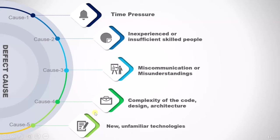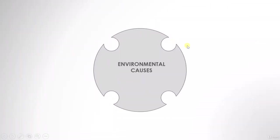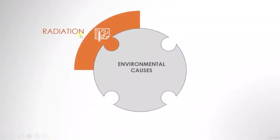Now let's see the environmental causes of defect. The first such cause could be radiation — there could be a defect which occurs due to radiation.